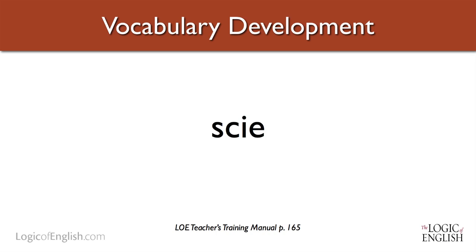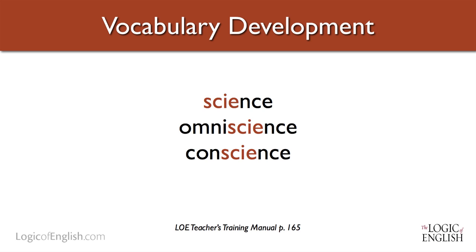I recently attended a presentation on morphology at the International Dyslexia Association. If you ever want insight into the latest research on language, it's a wonderful place to go — I think it's leading the world in research on the English language and multisensory instruction. One of the presenters put up the root 'sci.' I actually didn't know what it meant. It's found in the words science, omniscience, and conscience, and it literally means knowledge. So science literally means knowledge. 'Omni' means all, so omniscience means all-knowing. 'Con' means with or together, so conscience means with knowledge — and that's really powerful.